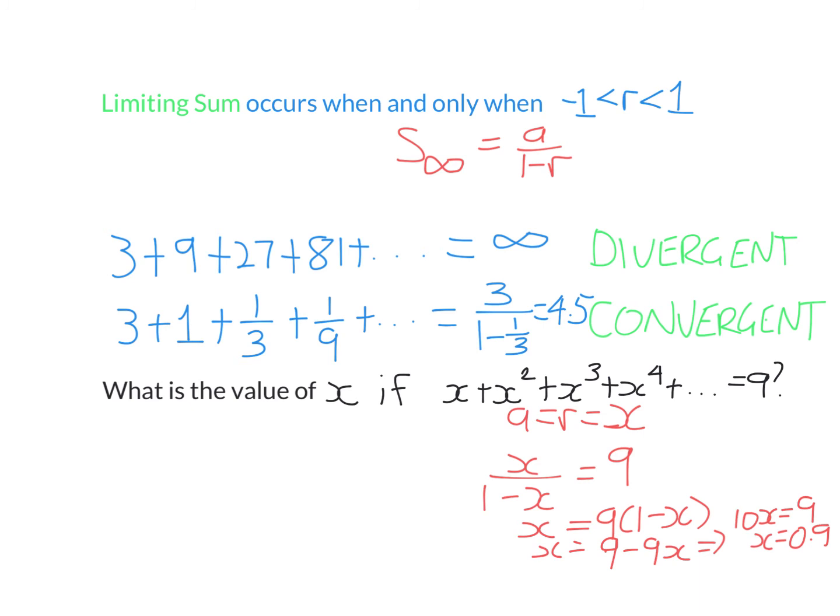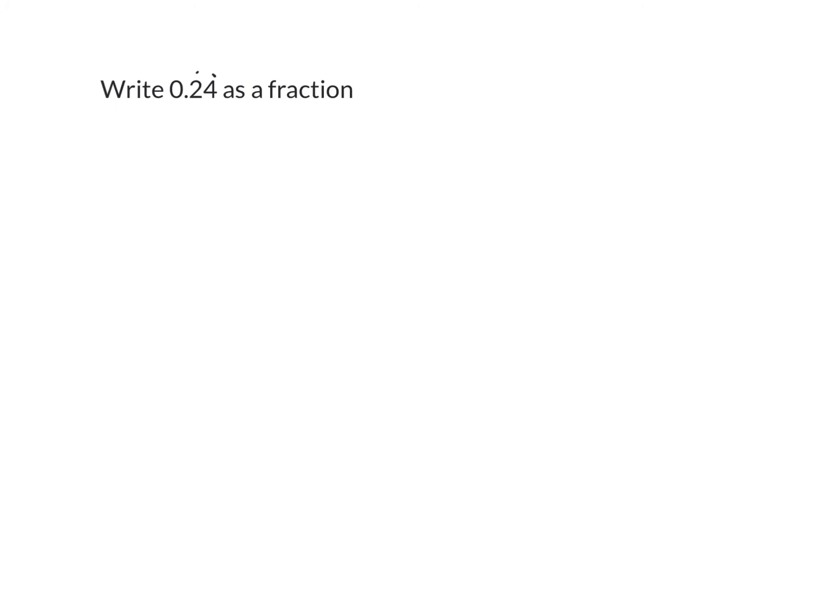Let's now look at using limiting sums in recurring decimals. We're going to write 0.24 recurring as a fraction. The dot above the 2 and the 4 means both digits are repeated forever. So it goes on like this. How can we possibly write this as a fraction? Well, it turns out this can be written as two limiting GPs added together. What we have here is the 2 is in the tenths column, the 4 is in the hundredths, the 2 is in the thousandths, and so on. So we can write it like this. We're now going to group all the 2s together and all the 4s together.